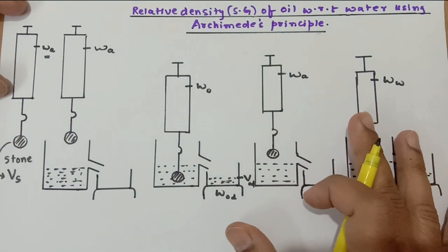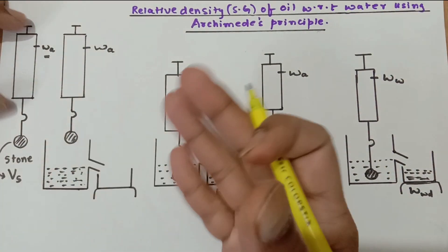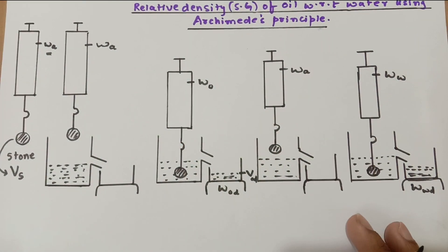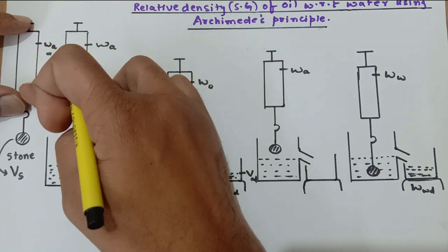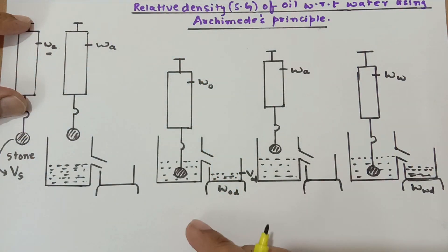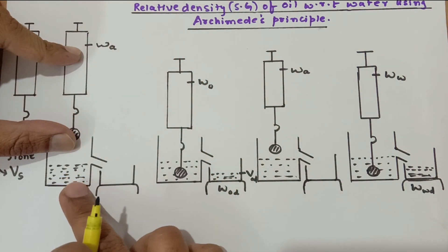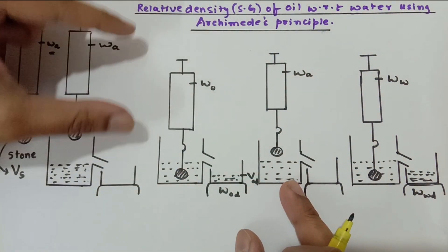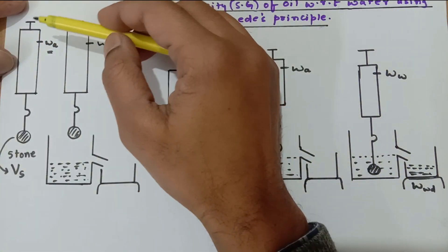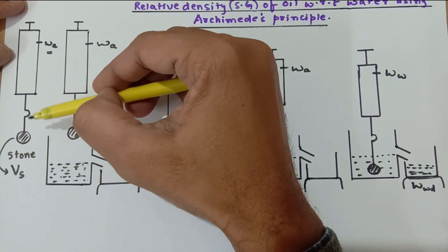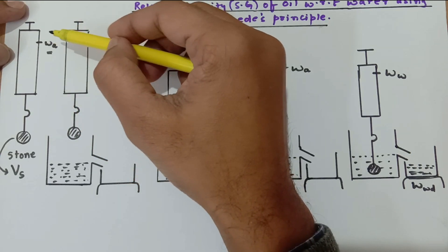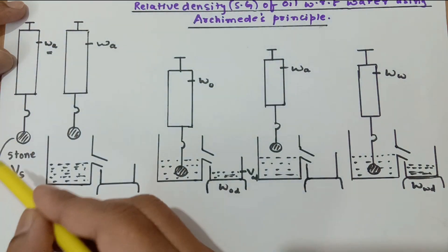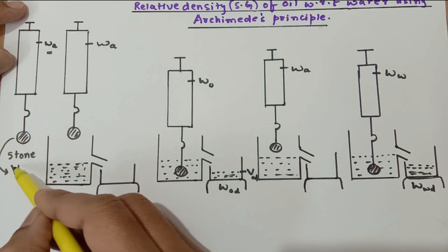We can actually do this experiment with a single setup, but then we need to repeat it two times — once for oil and once for water. In the picture it is shown that we require a single spring balance with the stone. First, I am going to suspend the stone with the help of a thread and record the weight of the stone in the air. So Wa is the weight of the stone in the air, and Vs is the volume of the stone.